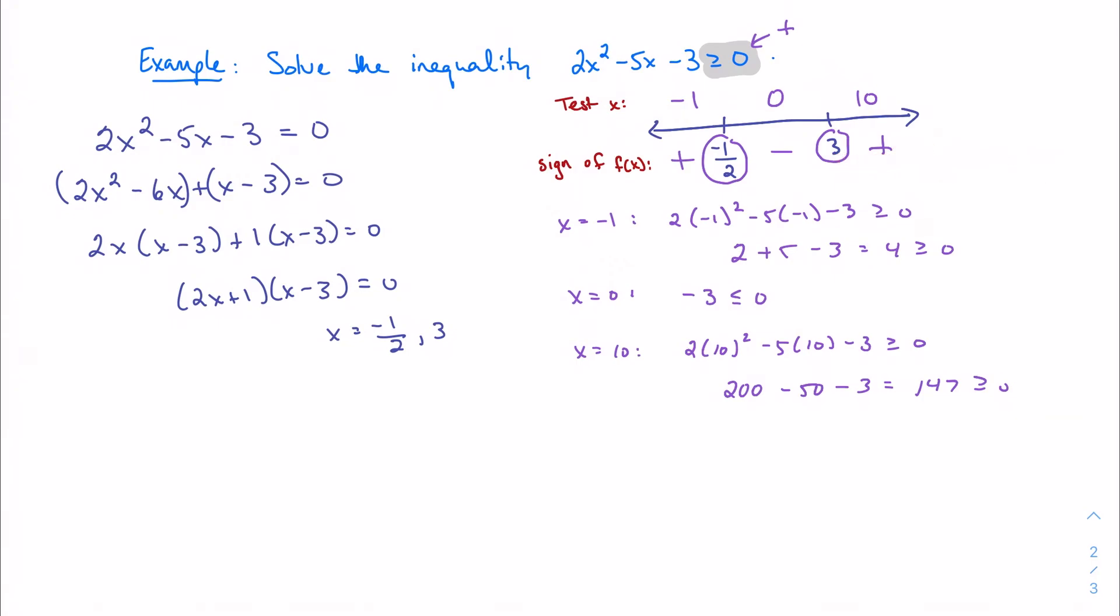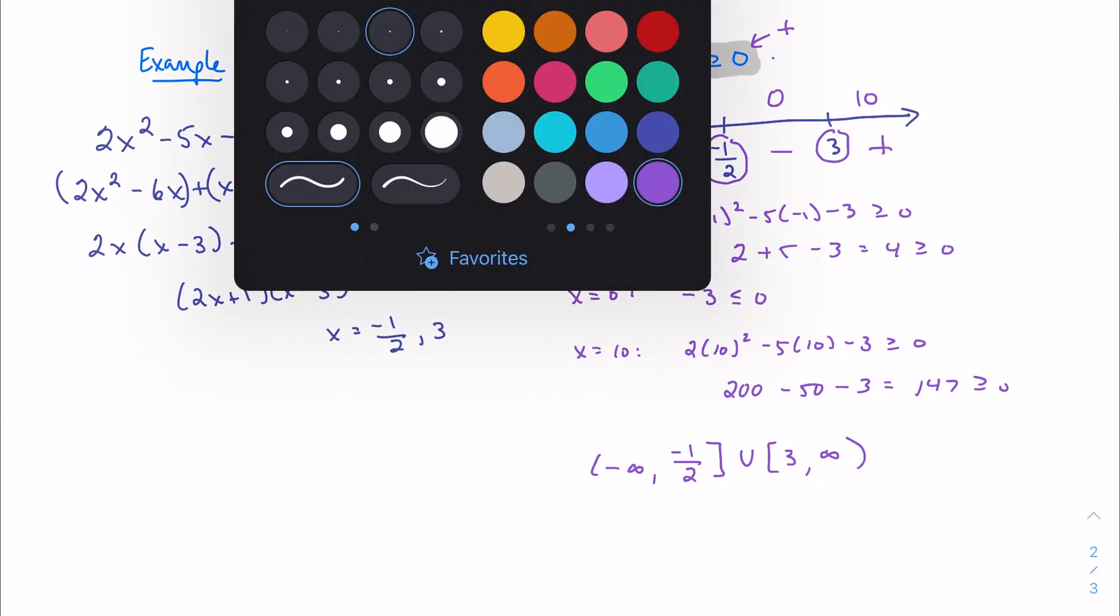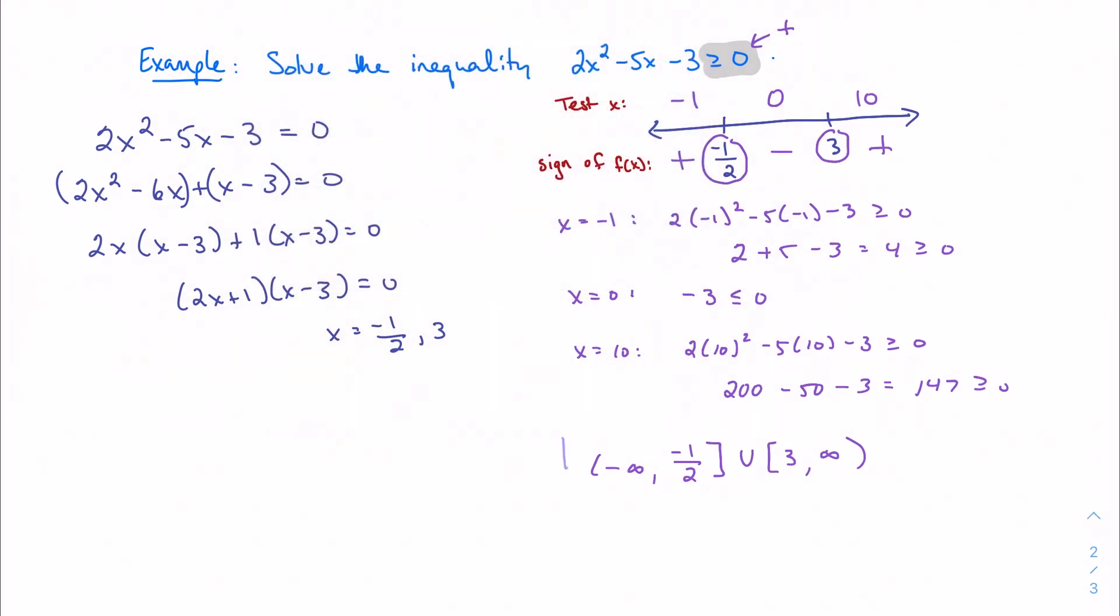I want as an interval from negative infinity all the way up to negative one-half, including negative one-half, and I also want to take three, including three, all the way up to infinity. And there is my interval - here is my final answer. And that is how you solve a quadratic inequality.